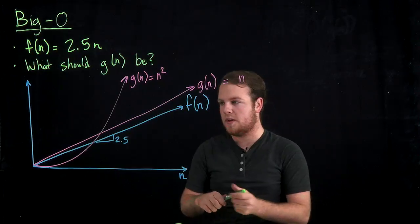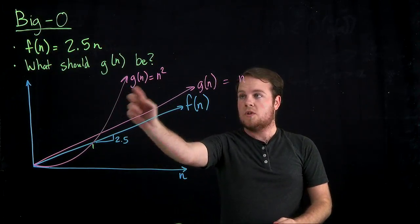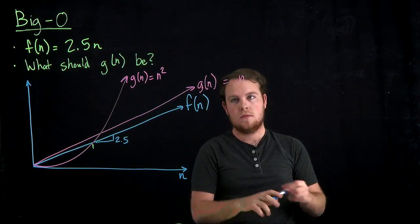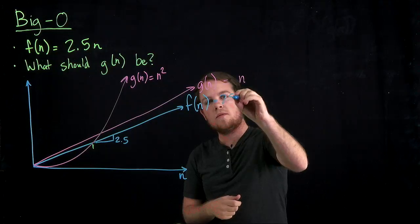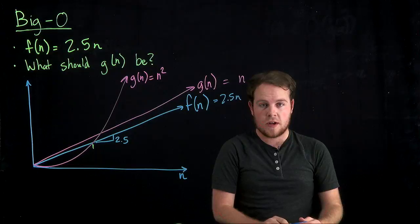Because after some point, this point right here, g of n, which is n squared, will always be larger than f of n. Because f of n is linear, g of n is quadratic.